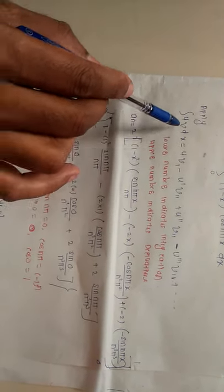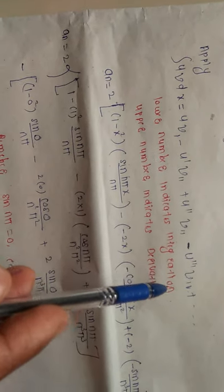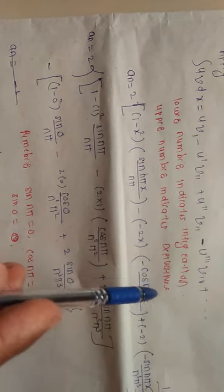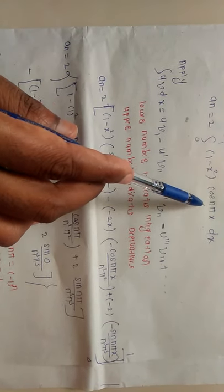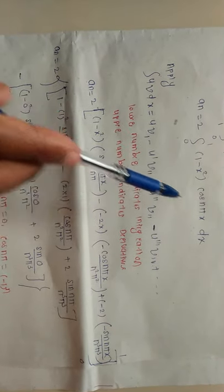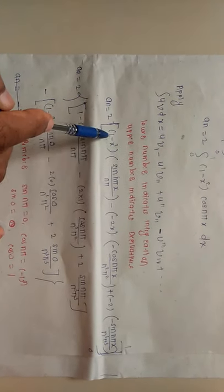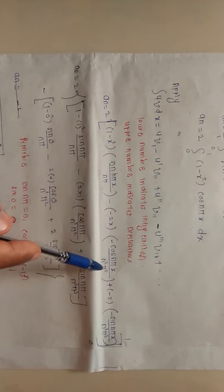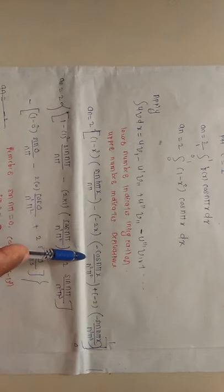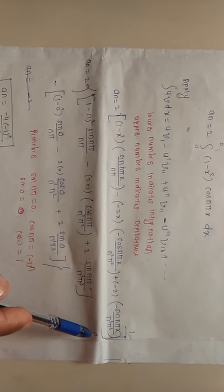We evaluate this integral using integration by parts for nth order. Here, u = 1 - x² (algebraic) and v = cos(nπx) (trigonometric). Applying integration by parts: the integral of cos(nπx) is sin(nπx)/(nπ); the derivative of (1 - x²) is -2x; the integral of sin(nπx)/(nπ) is -cos(nπx)/(n²π²); the derivative of -2x is -2; and the integral gives -sin(nπx)/(n³π³).